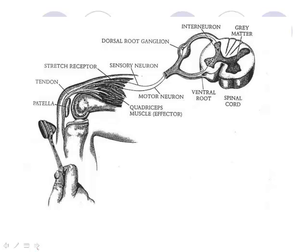A classic example is the patellar reflex test. The doctor taps below your patella bone, sending a signal up your sensory neuron into the spinal cord. The interneuron in the spinal cord interprets the signal and sends it back out through the motor neuron to the muscle, causing your leg to flick up.